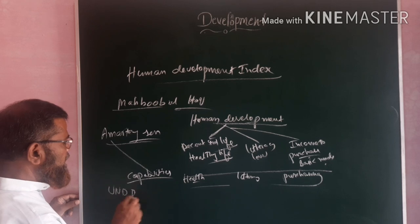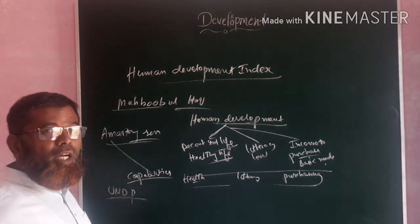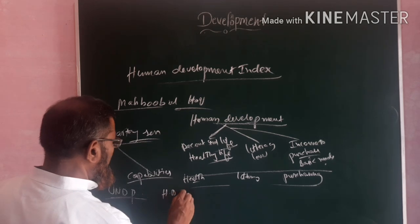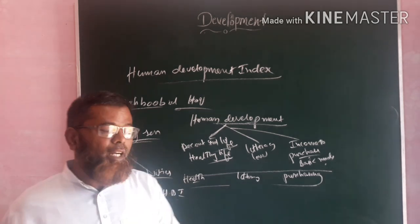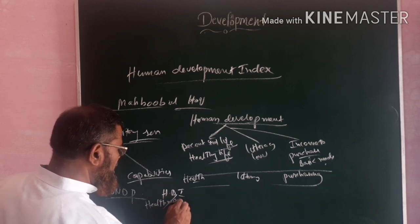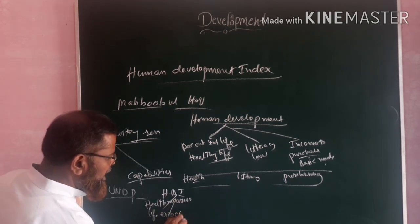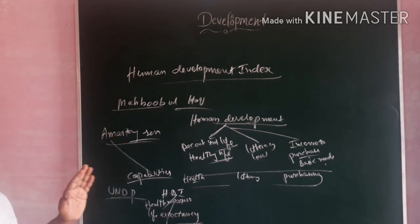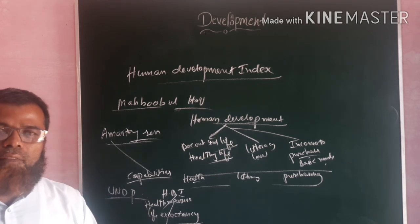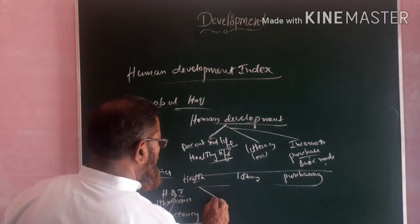According to the UNDP, the Human Development Index is measured on the basis of health measures. The factor used to know about health is life expectancy — the average life a person in a particular country is expected to live, such as 60 or 65 years. On the basis of that, we can measure development. The second factor is education — the minimum schooling every person in that country should have.